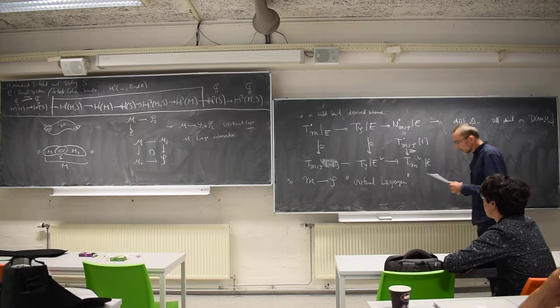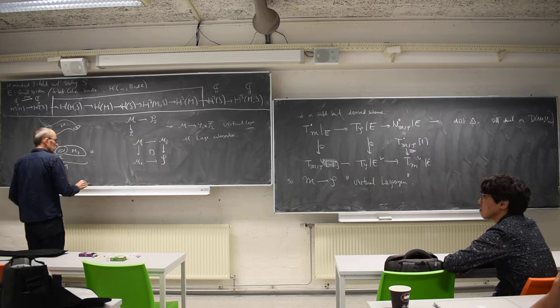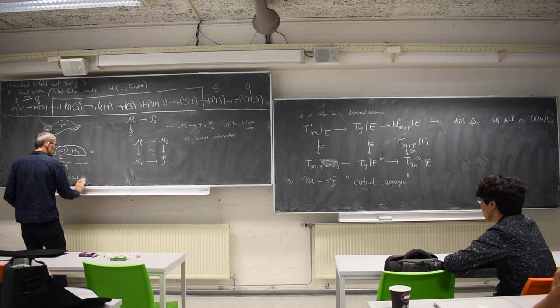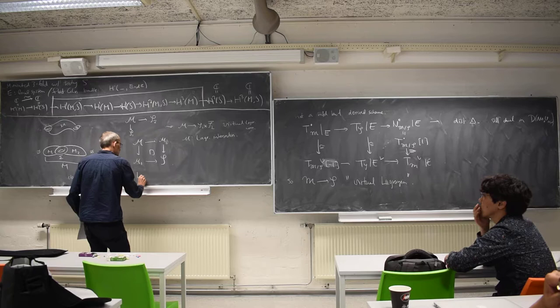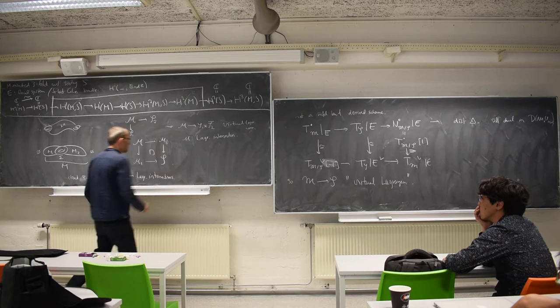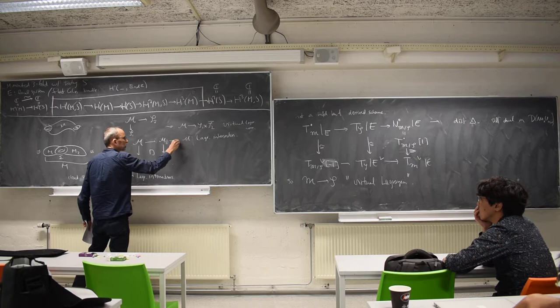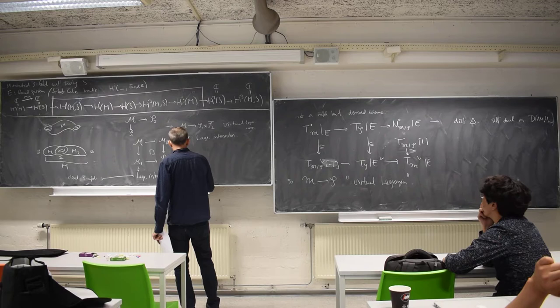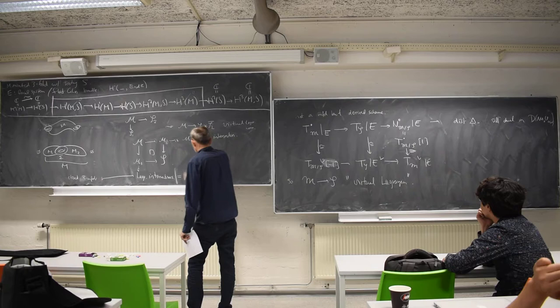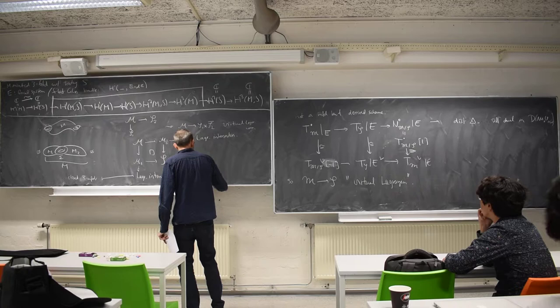The gist is: closed three-manifolds go to Lagrangian intersections. But you should also be able to think of this Lagrangian intersection as a Lagrangian correspondence from the point to the point. So this is the same thing as a Lagrangian correspondence, and in other words it's a virtual Lagrangian over the point.